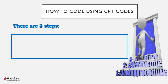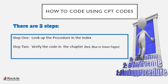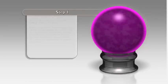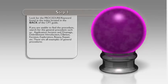We're going to get right to it — how to code using CPT codes. It's simple. There are three steps. Step 1: look up the procedure in the index. Step 2: verify the code in the chapter, which has red, blue, or green pages. Step 3: confirm if the guidelines or other directives apply. It's that simple. We'll review the steps again, then we'll get coding.